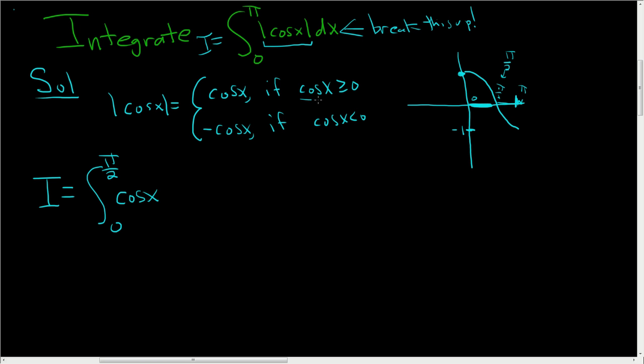Because that's what happens when it's positive or 0. So dx plus the definite integral from pi over 2 to pi. And when we're over there from pi over 2 to pi in this area here, cosine x is less than 0 here. So then we use this piece, right? Because cosine x is less than 0. So we get minus cosine x.